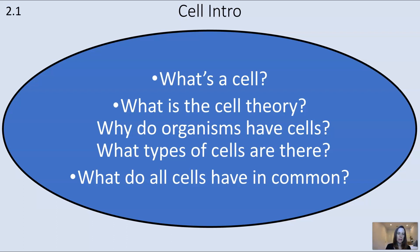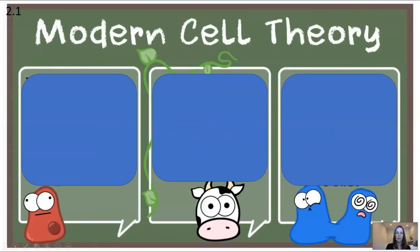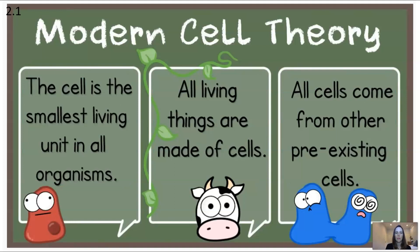Cell theory has three parts. The first part is that the cell is the smallest living unit in all organisms. The second part is that all living things are made of cells. And the third part of modern cell theory is that all cells come from other pre-existing cells.